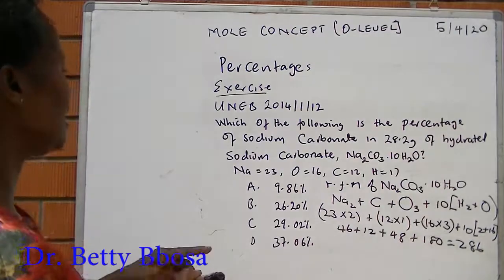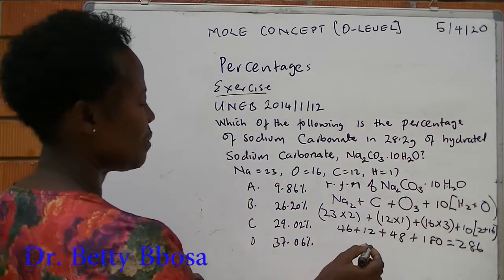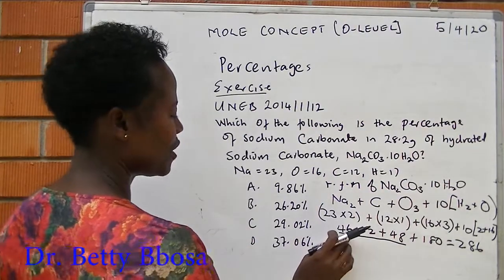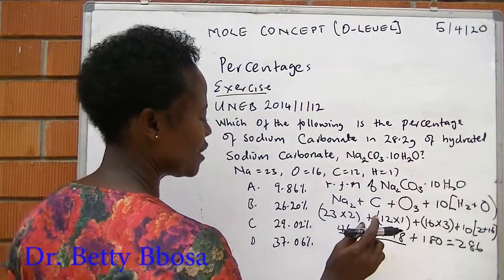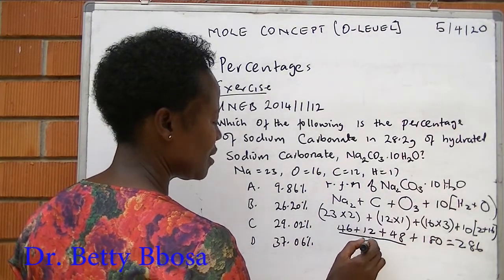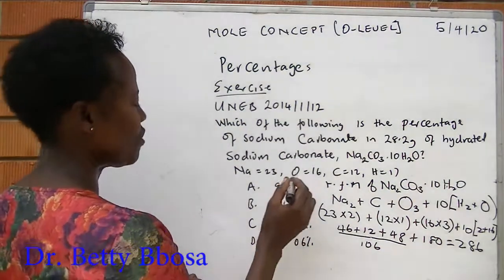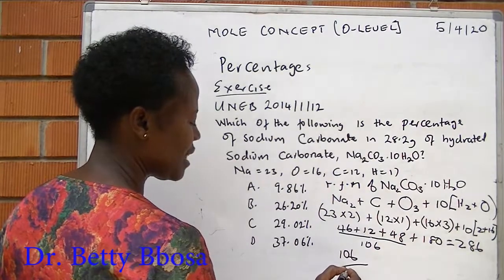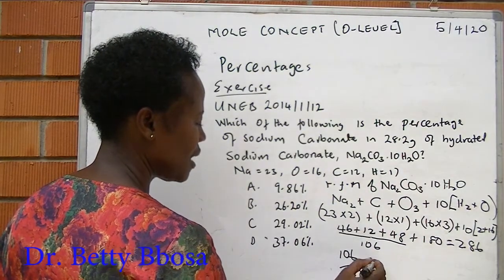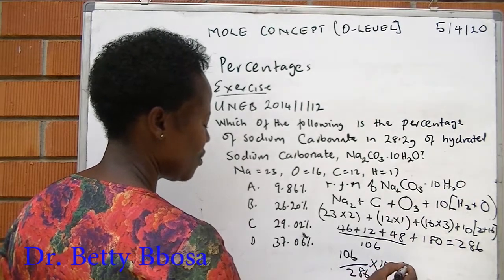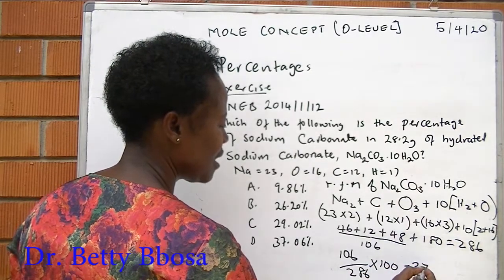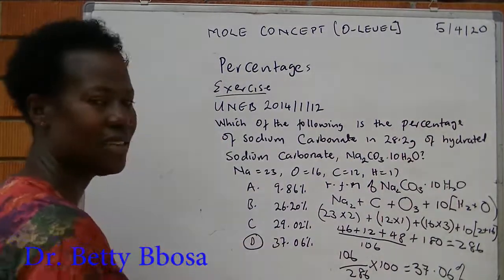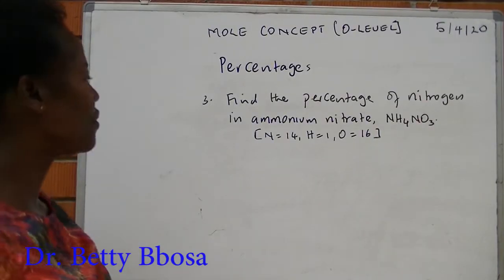But they are interested in sodium carbonate. For sodium carbonate, I should get the total here: 46 plus 12 plus 48, the total is 106. Therefore, the percentage of sodium carbonate will be 106 over the total times 100, which is equal to 37.06%. The answer is D.